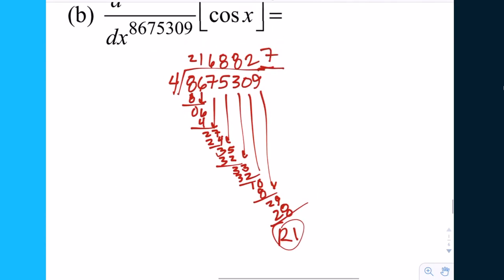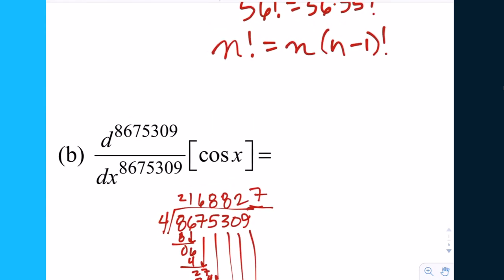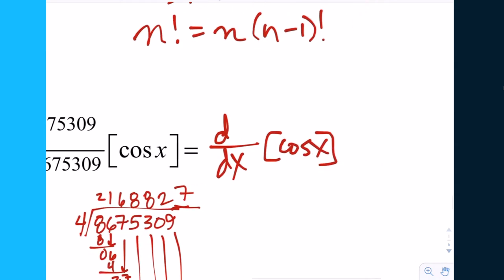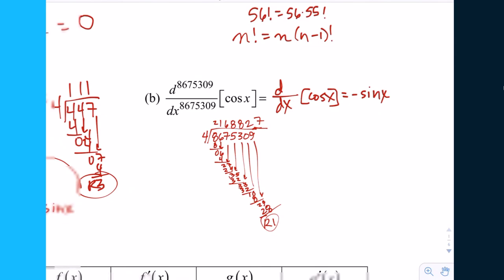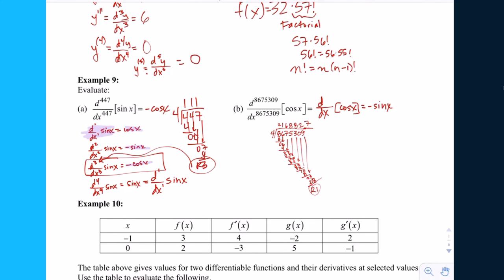So if I did it right, the remainder is one, which means that the 8,675,309th derivative of cosine is equivalent to the first derivative of cosine, which is negative sine. So again, the remainder becomes the number of the derivative that you'd have to take. For sine and cosine, the period is 4.